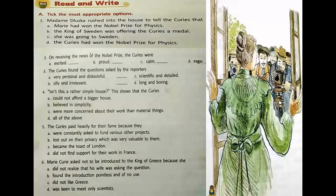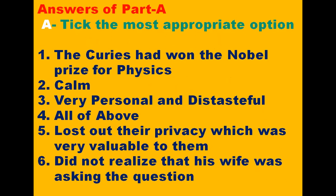Now we are going to do the question answers. The very first question is MCQ. The first MCQ is: Madame Duluzka rushed into the house to tell the Curies that — the first option is that the Curies had won the Nobel Prize for Physics. The second option is about the work, and the third one is very personal and distasteful.